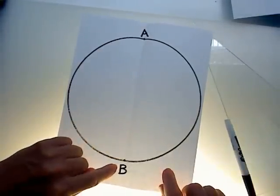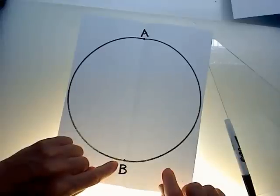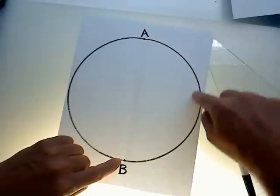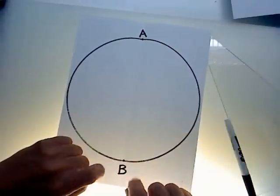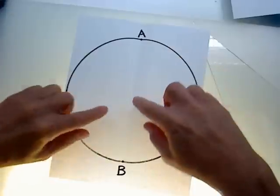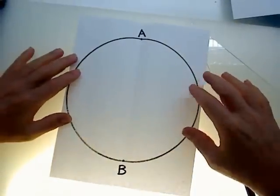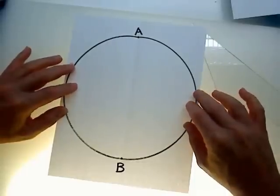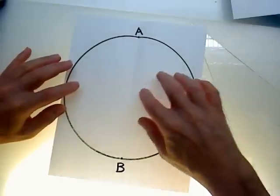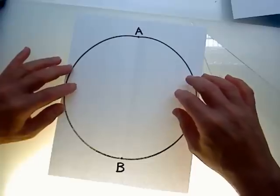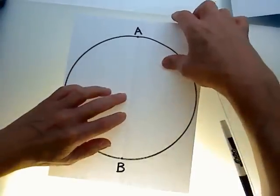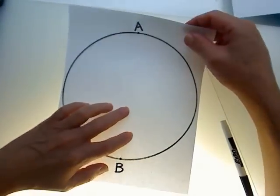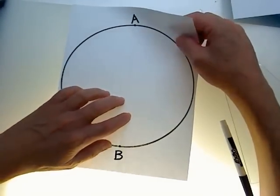AB forms a diameter which is a straight line, which is 180 degrees. So if we bisect it, we are forming a 90-degree angle because 180 divided by 2 is 90.